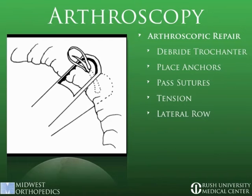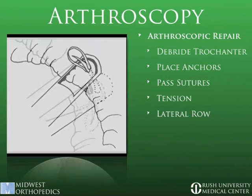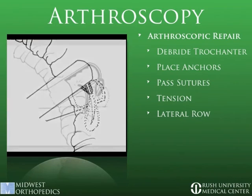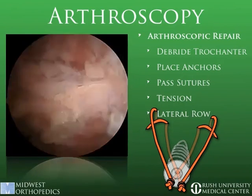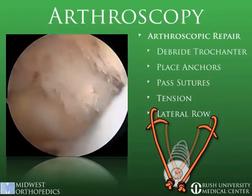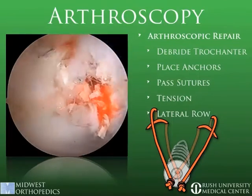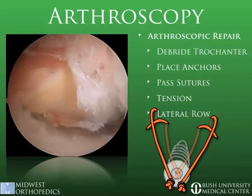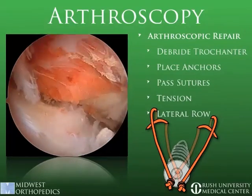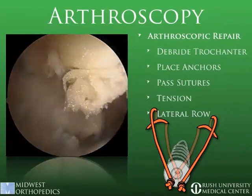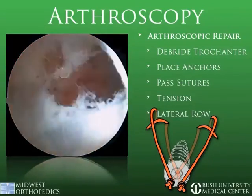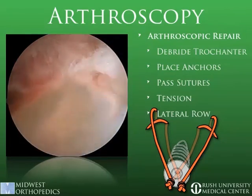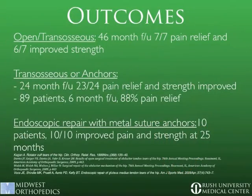Sutures are then passed through the tendon, or in this case the musculotendinous junction, in a modified Mason-Allen configuration. If further sutures are required, as were in this case, peak swivel lock anchors can be used distal and laterally to further recreate the normal footprint. In our patient seen here, we can see that the musculotendinous junction was brought back down to the anatomic footprint of the abductor insertion.